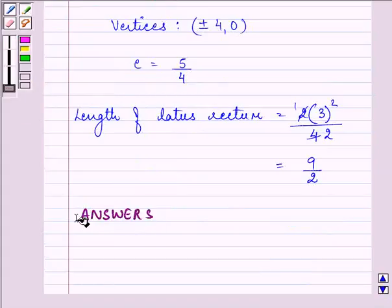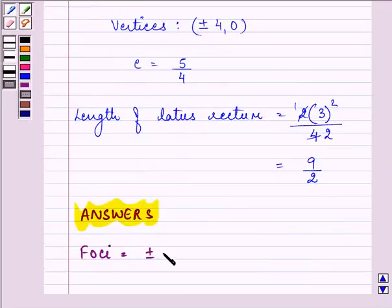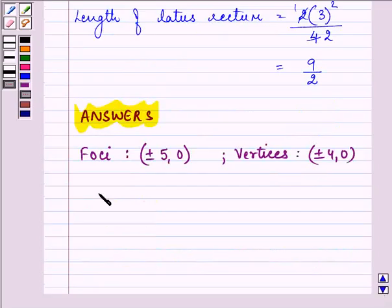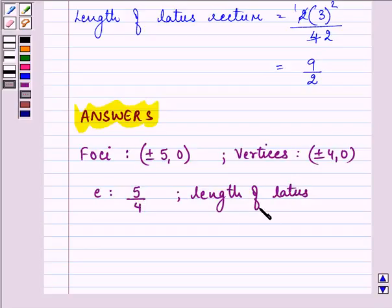Once again, we obtained the value of foci equal to plus minus 5, 0. Vertices are plus minus 4, 0. Eccentricity is 5 by 4. Whereas, the length of latus rectum is 9 by 2.